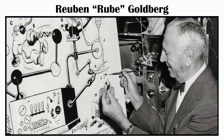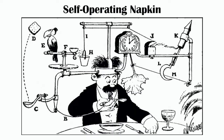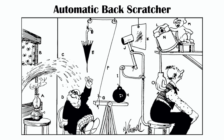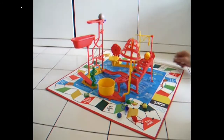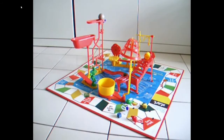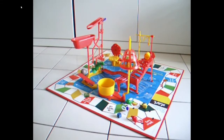Rube Goldberg was a cartoonist, engineer, and inventor in the early 1900s. His cartoons, which depicted elaborate machines accomplishing simple tasks, led to the term Rube Goldberg machine. If you've ever played the game Mousetrap, which was created in the 1960s, you've seen one of these machines in action.